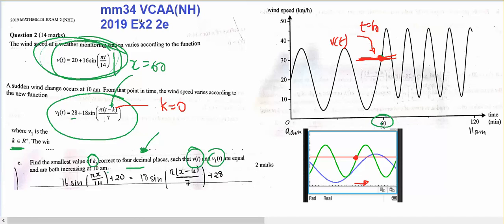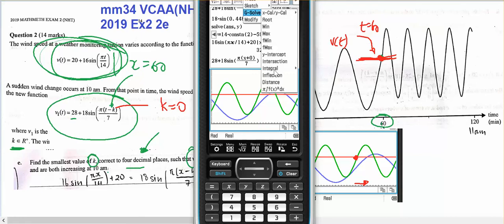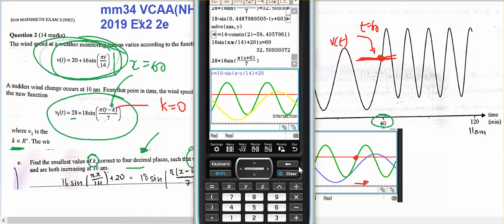So I can do an intersection on my calculator between the green line and the red line. I'm looking for this one. So analysis, g, solve, intersection, not the yellow, well not the blue, the red yes, and the green yes, and I'm not interested in that one or that one, 56.56.